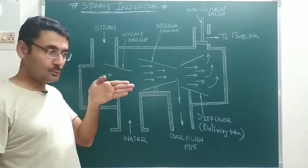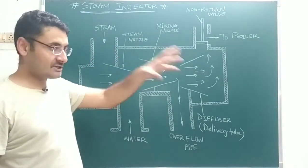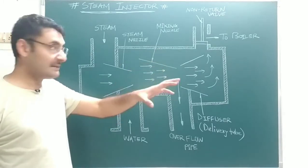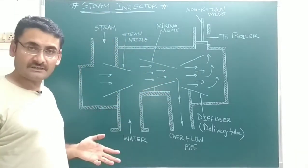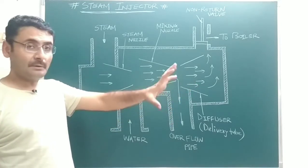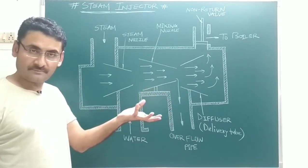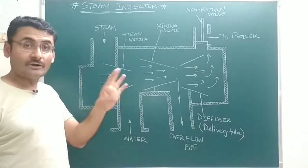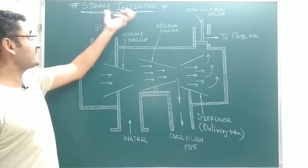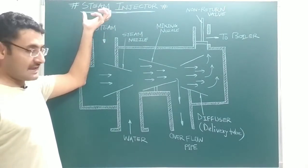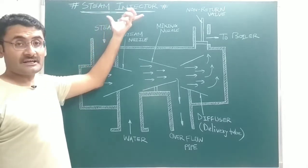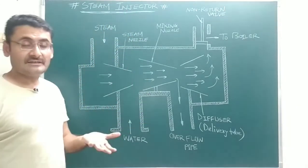Generally, to supply water at high pressure inside the boiler we use a feed pump, but instead we can use a steam injector. A feed pump requires some power to work, but a steam injector does not require any external power — it uses the high-pressurized steam already available inside the boiler, thus saving power.